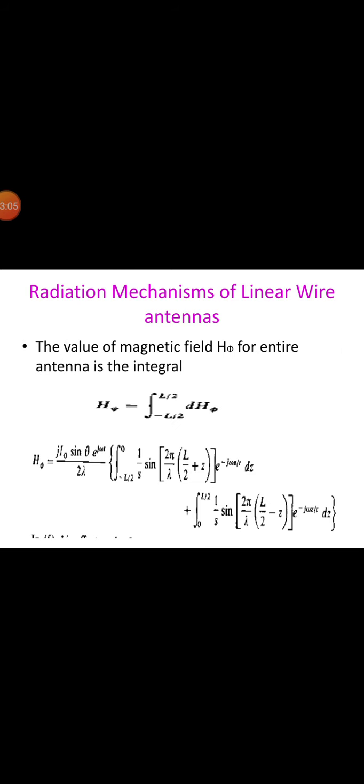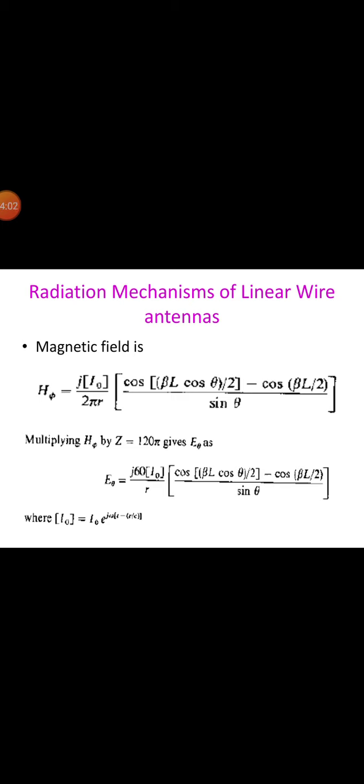The value of the magnetic field H_phi for the entire antenna is the integral: H_phi = -∫ from -L/2 to +L/2 of dH_phi. At large distances, the difference between s and r can be neglected, so s ≈ r - z*cosθ. Substituting these values, the magnetic field H_phi is equal to j * I0 / (2π * r) * [cos(β*L/2 * cosθ) - cos(β*L/2)] / sinθ.